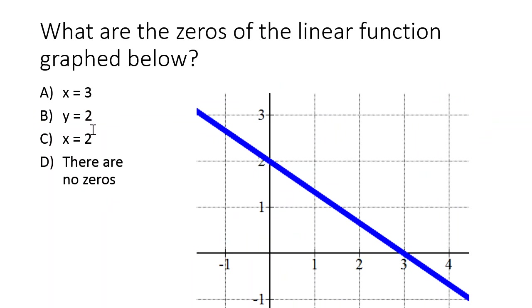So what are the 0s of the linear function graph below? We'll take a look at it. Go ahead and work this one on your own. See if you can beat me to it. I'm going to follow the blue line along until it hits the x-axis. That's the 0. It hits the x-axis at 3. So our 0 is x equals 3.